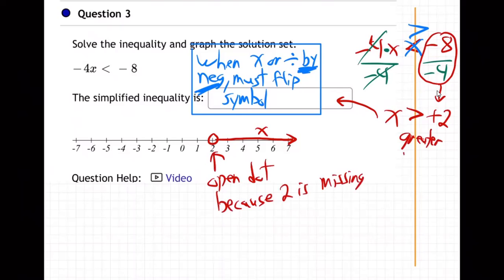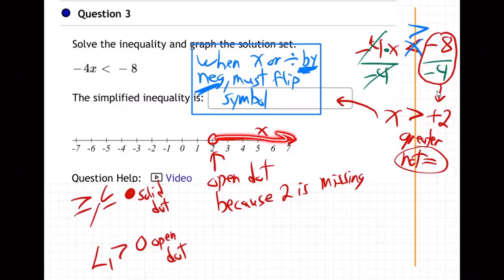This is greater than - open dot, open dot because 2 is missing, right? Why? Because it's only greater, not equal. If it said x greater than or equal to 2, I would have a solid dot.